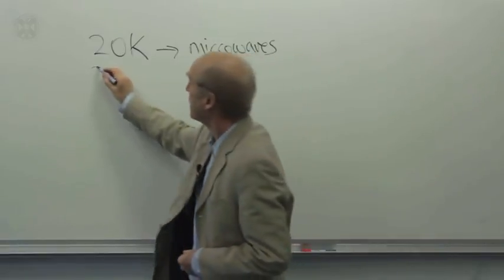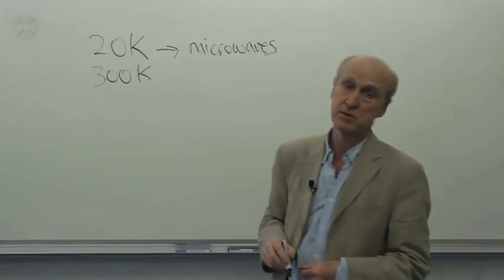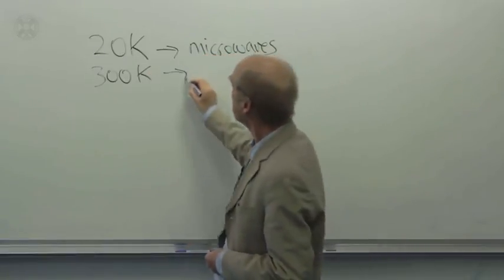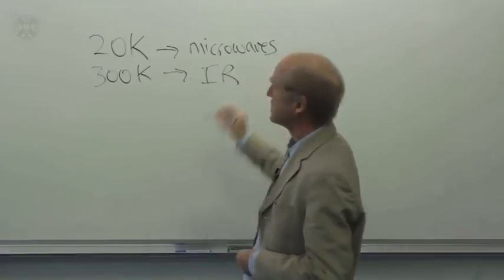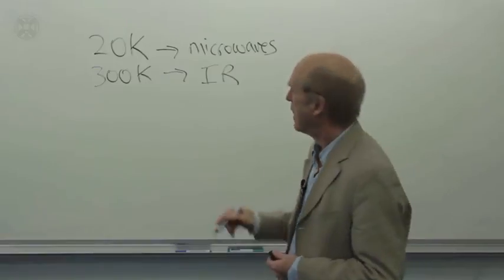On the other hand, something at about 300 degrees Kelvin, like the surface of a typical planet, that makes infrared radiation. So to detect that we need infrared detectors.